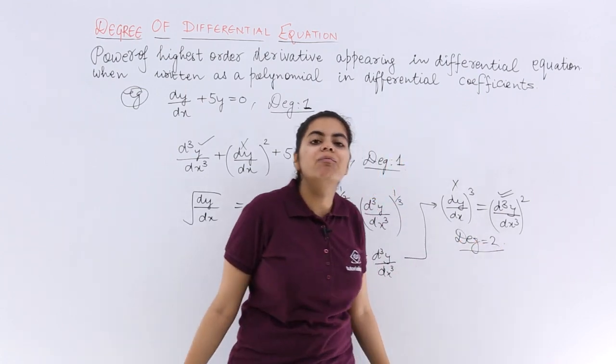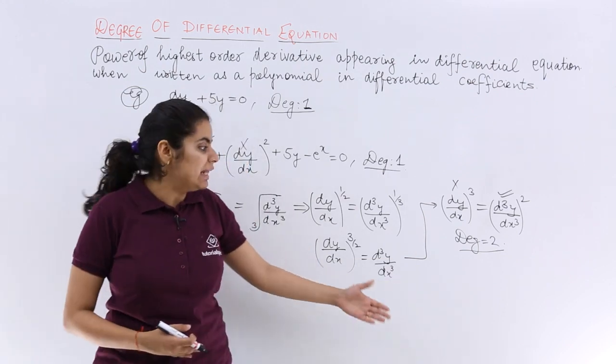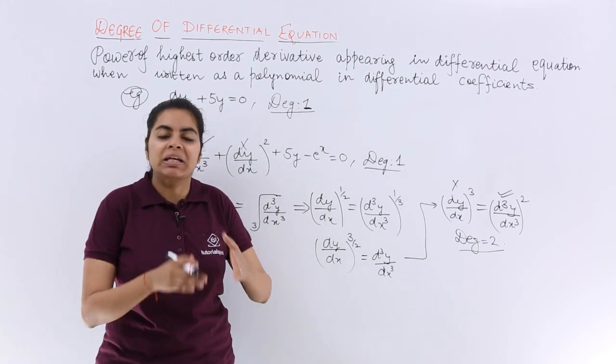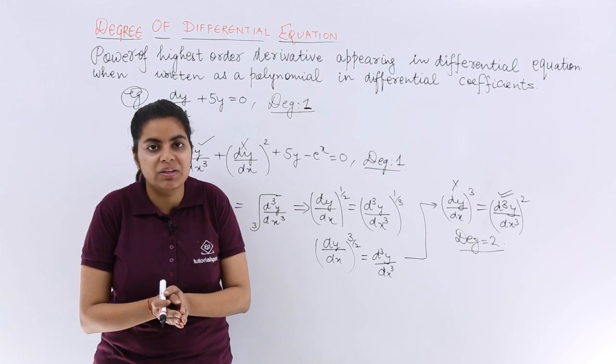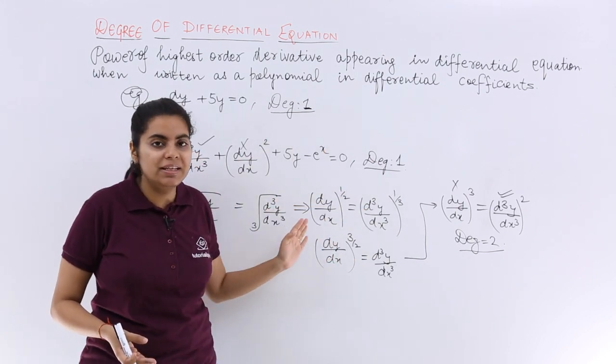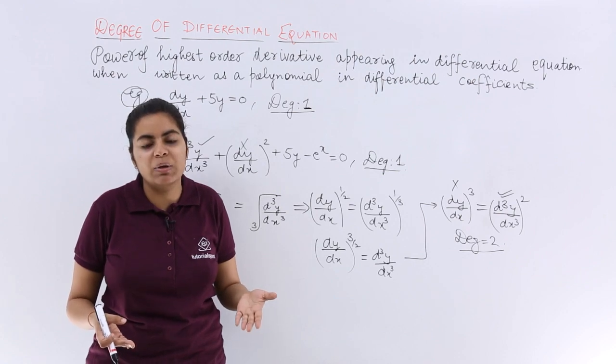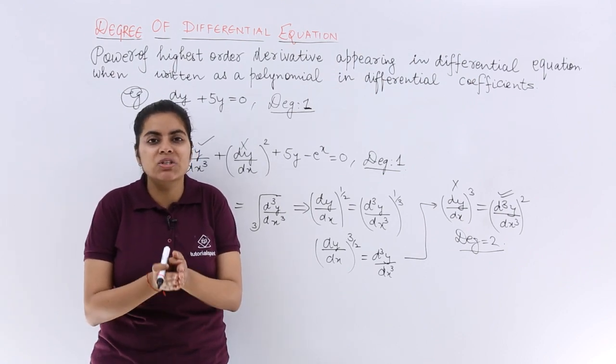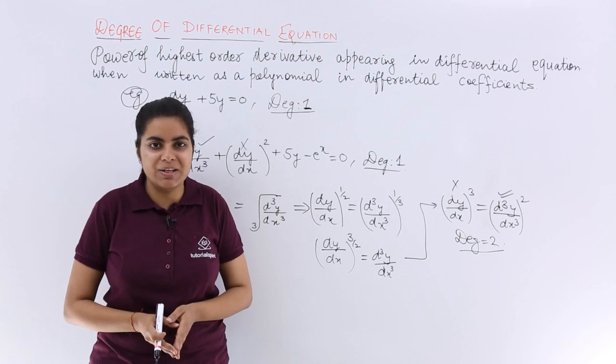So in order to compute certain things, you need to first simplify. And this is a very good example of it. The other thing, the degree, the order, these are always positive. You never encountered anything negative and you will never encounter because the powers have to be positive. So that is all about the degree of a differential equation.